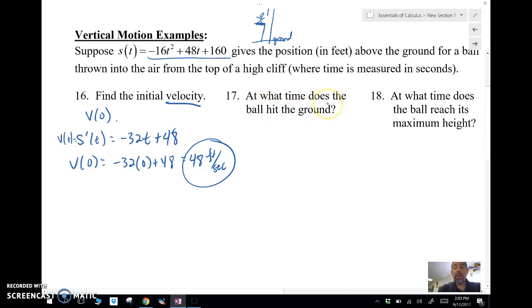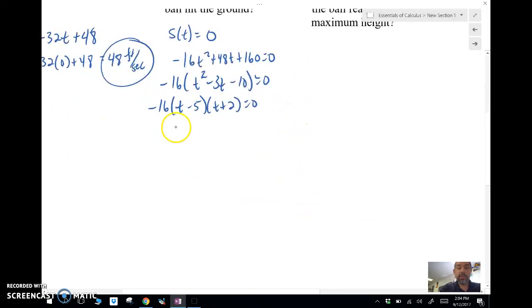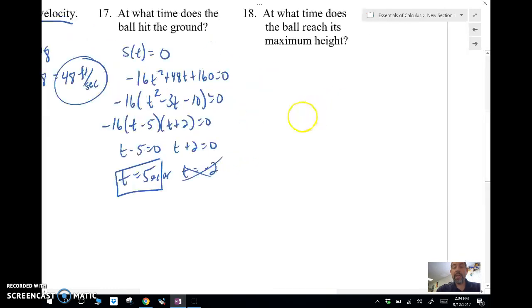At what time does the ball hit the ground? Well, the ball hits the ground when s of t is equal to 0. This would be when there's no height right here on the ground. So I'm just going to set this equal to 0. Negative 16t squared plus 48t plus 160 equal to 0. And this actually factors kind of nicely: 16 times t squared minus 3t minus 10. t minus 5, t plus 2 equals 0. And I'm going to get t equals 5 or t equals negative 2. Now, we're not going to have negative 2 seconds. We're looking forward in time, so 5 seconds is my answer there. Can't go back in time unless you're Marty McFly.